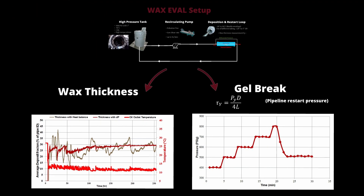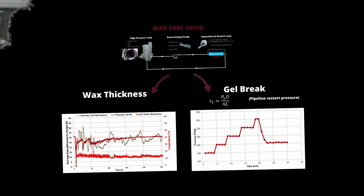The main experiments on the wax eval loop are the study of the wax deposition and the gel break test. Wax deposition can be monitored according to the flow rate, the time, the temperature change, or injection of chemicals. A wide range of tests is possible. The gel break or restart test consists in measuring the minimum restart pressure required to move a gelled oil into a pipe, according to the temperature and the aging. This experiment enables to calculate the yield stress, which is an important parameter for pipeline design.